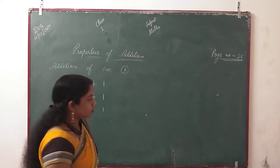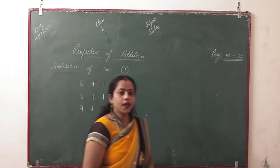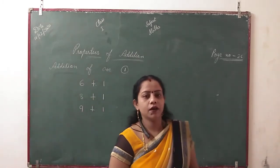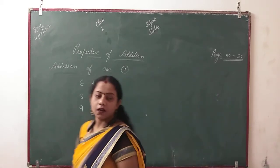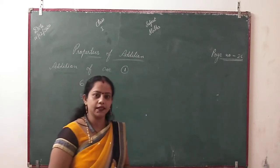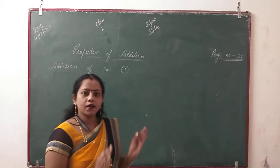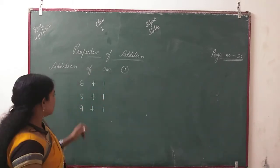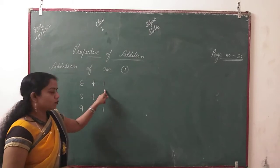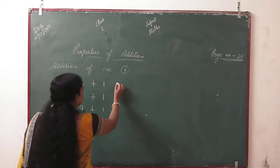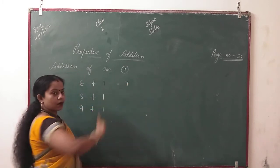What is the first property of addition? Addition of 1. If we add 1 to any number, the answer is the next number. For example, if we add 1 to 6, then the answer is 7. 7 will be the next number.